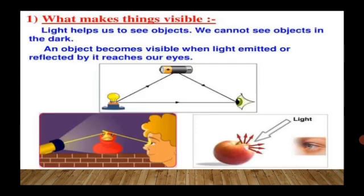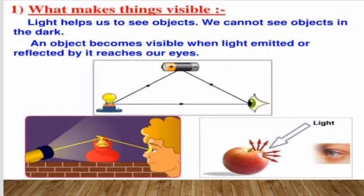What makes things visible? Light helps us to see objects. We cannot see objects in the dark. An object becomes visible when light emitted or reflected by it reaches our eyes.